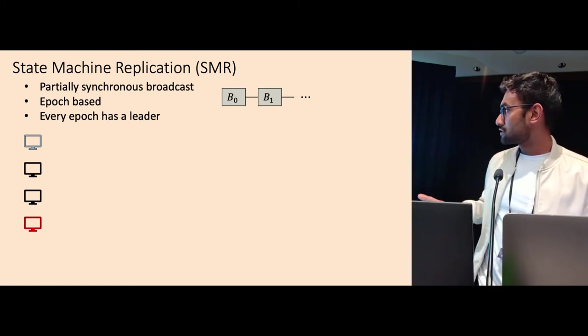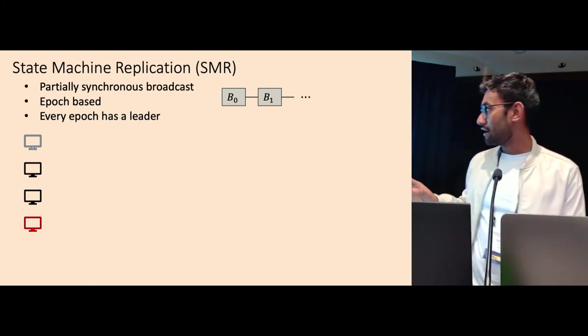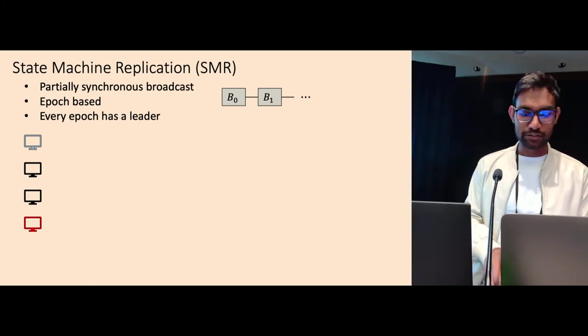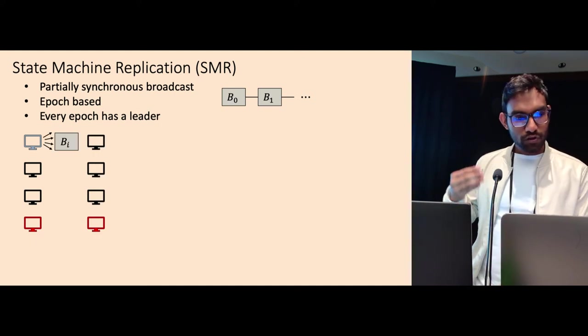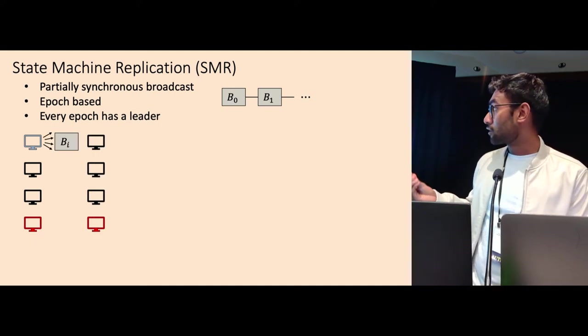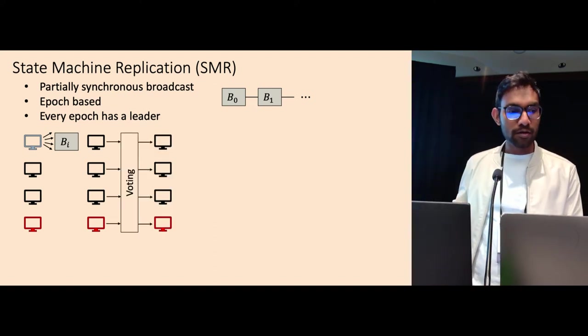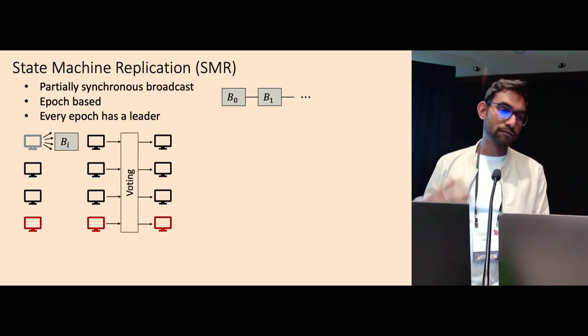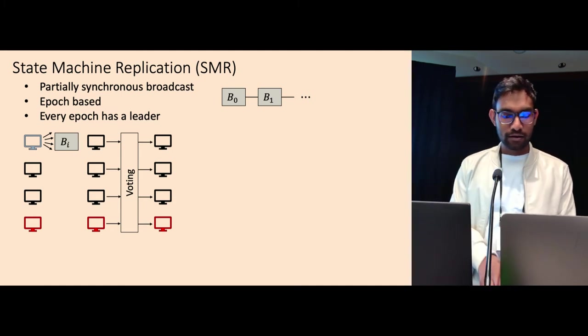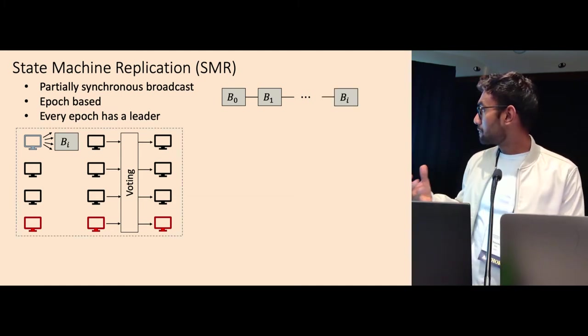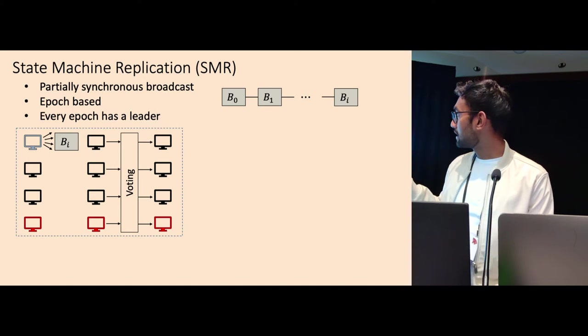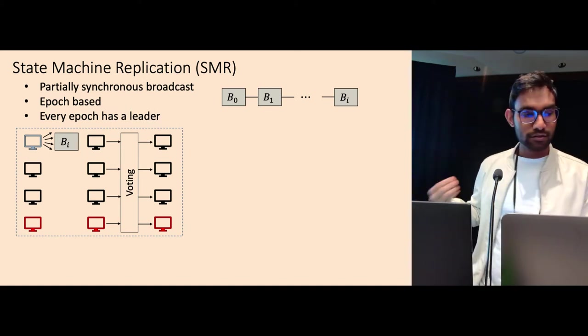So we have four nodes, where the first node is the leader, and let's say a fourth node is a malicious node. Then, in each epoch, let's say the i-th epoch, the leader will propose a new block, Bi, and then the nodes will participate in some kind of voting. This voting could be multiple rounds as well, such that at the end of this voting round, everybody decides that let's accept this block, and they append this block to the ledger.